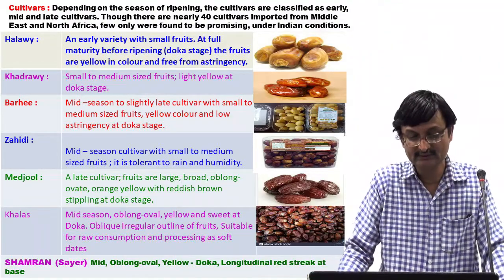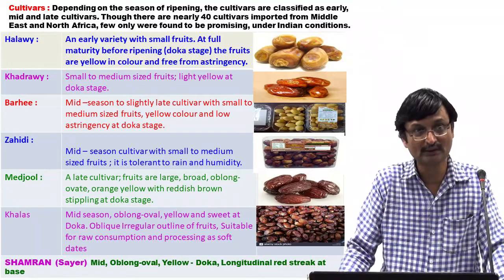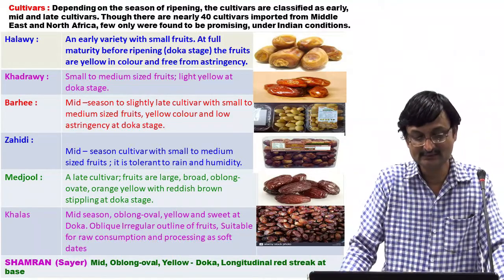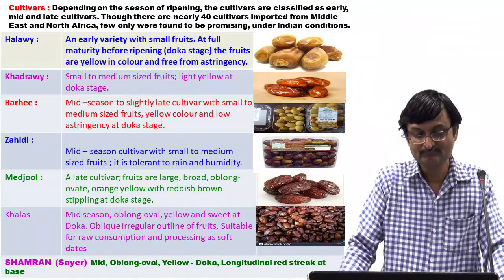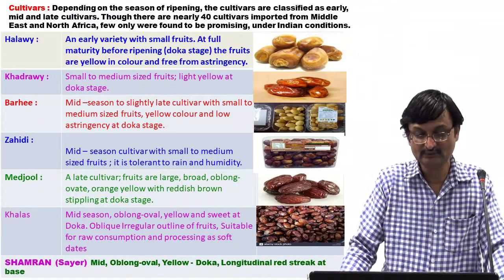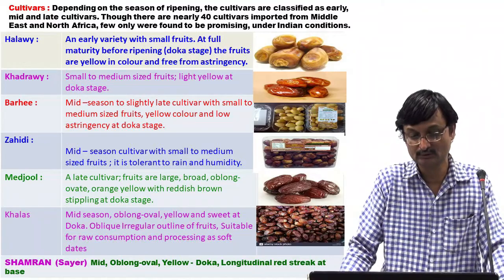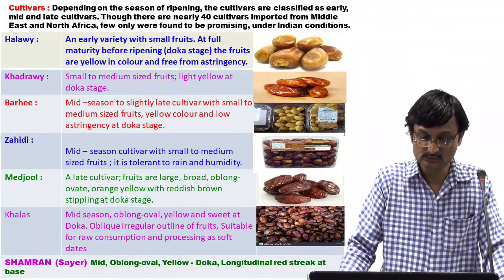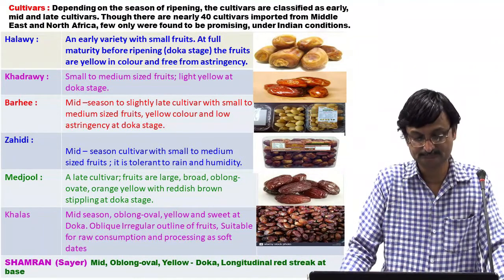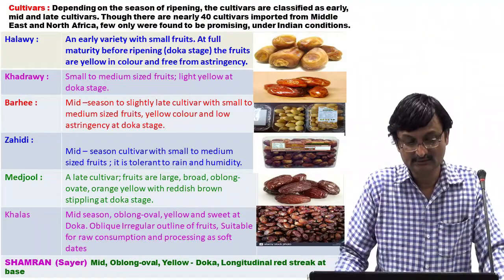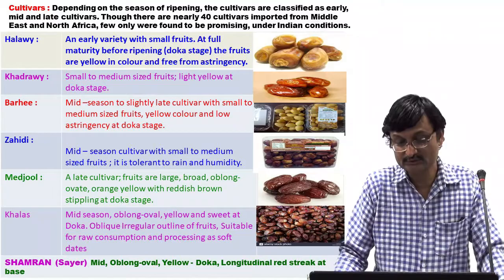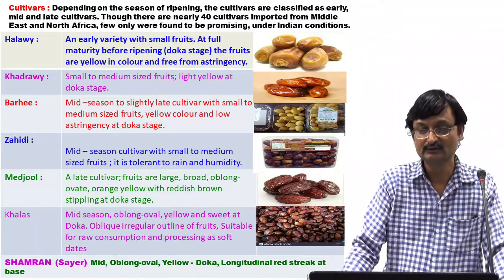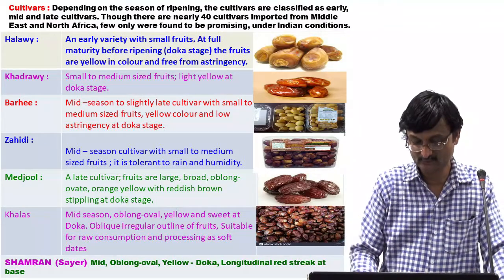Medjul fruits are orange-yellow with reddish-brown stripping at Doka stage. 5. Khalas — mid season, oblong-oval, yellow and sweet at Doka stage. Oblique, with an irregular outline of fruits, suitable for raw consumption and processing as soft dates. 6. Shamran — mid season, oblong-oval, yellow at Doka stage. Longitudinal red streaks are found at the base of fruits.